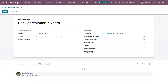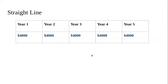Here you can choose the depreciation method. There are three methods. The first one is Straight Line — in this case it calculates depreciation linearly, equally splitting the amount for each year. For example, if it is 4,000 in the first year, the next year will also be 4,000, and so on equally for each year.